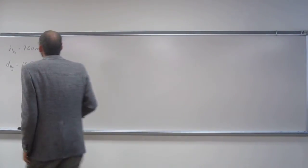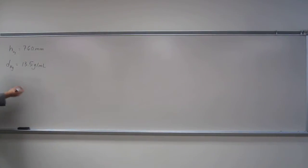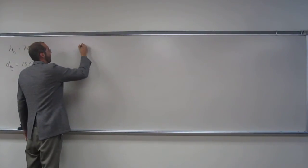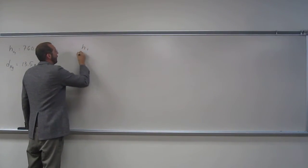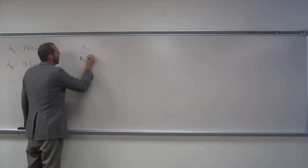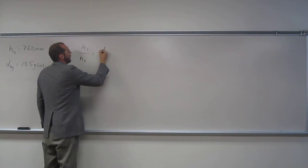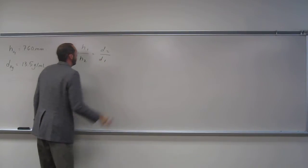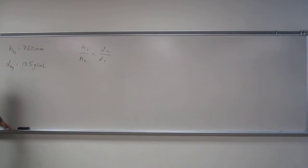So the thing we have to remember in order to do this is the equation I just gave you. The height of 1 divided by the height of 2 equals the density of 2 over the density of 1. So we've got the height of 1, density of 1. We know the density of water is going to be 1.00 grams per mil, so we should be able to figure out what is the height of water.